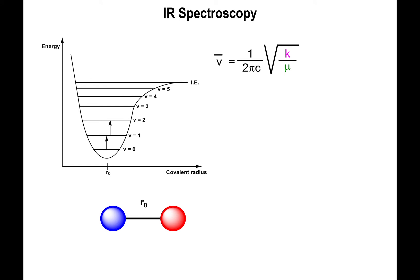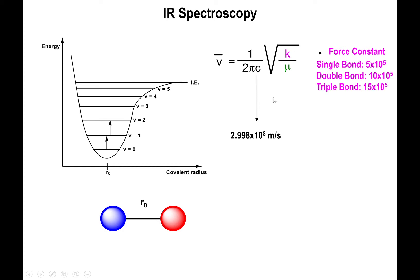The first thing we need to address is the calculations that go along with this. The quantum mechanical framework for the Morse potential is given by this equation, where V-bar is the wave number in inverse centimeters. This equals one over two pi c, where c is the speed of light — 2.998 times 10 to the eighth meters per second, although we will change this to centimeters per second. K is the force constant, which tells you how strong your bond is.